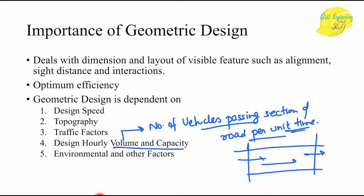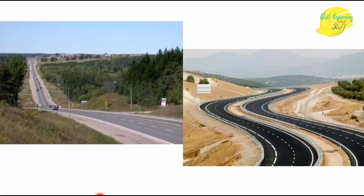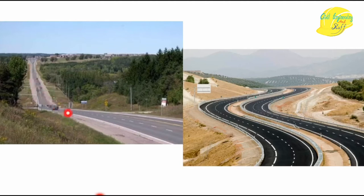Environmental factors and topography play a very important role in geometric design. For example, in an area with both decreasing and increasing gradient, designing a straight road would require a lot of filling and cutting, costing significant time and money and making the project uneconomical. The cost-benefit ratio of road construction must be kept in mind.